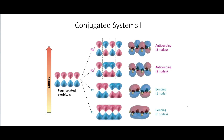In this video, I am going to start bringing in some new ideas that we haven't talked about yet in this organic chemistry playlist — ideas that come from molecular orbital theory, so we can talk about conjugated systems. I do have an entire playlist about molecular orbital theory, but this is going to be just a very quick crash course on the amount of molecular orbital theory we will need to understand in order to do this organic chemistry.